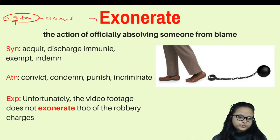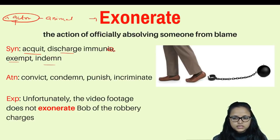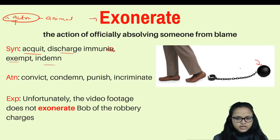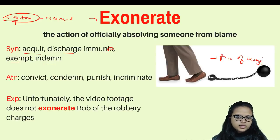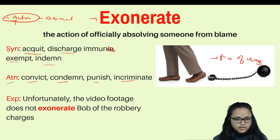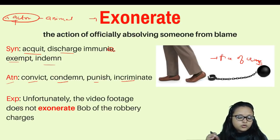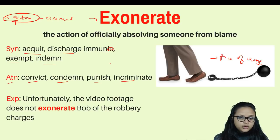Exonerate means the action of officially absolving someone from blame — this person is innocent, let them go. Synonyms are: acquit, discharge, immune, exempt. Antonyms are: convict, condemn, punish, incriminate. Example: 'Unfortunately, the video footage does not exonerate Bob of the robbery charges.' It means the video footage is not concrete evidence to free Bob from the charges of robbery.